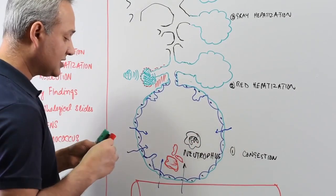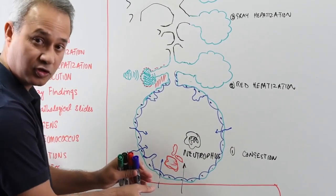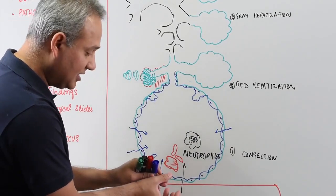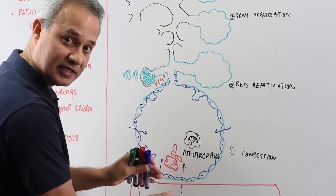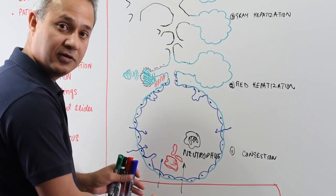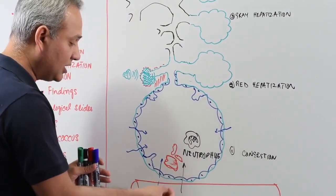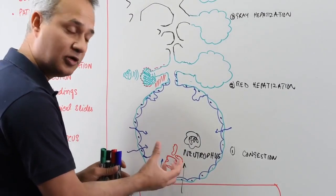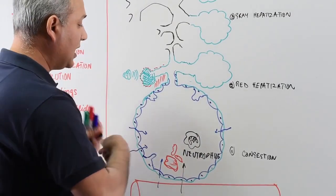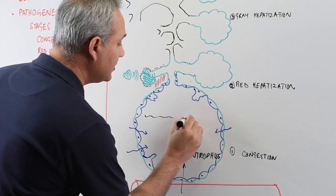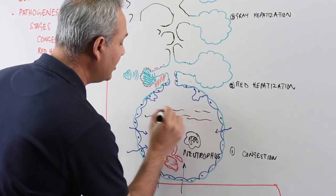Why would the exudate start coming in? Because the inflammation would cause local congestion. The blood vessels will become dilated and bring in more blood flow. This will increase in those areas and cause transudate to appear.